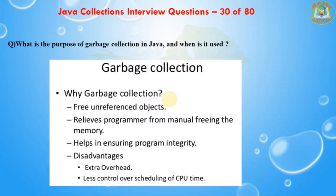The next question is: what is the purpose of garbage collection in Java, and when is it used? The purpose of garbage collection is to identify and discard objects that are no longer needed by the application so that resources can be reclaimed and reused. Garbage collection is used to free unreferenced objects, relieve programmers from manual memory management, and help ensure program integrity. The disadvantages are extra overhead and less control over scheduling of CPU time.